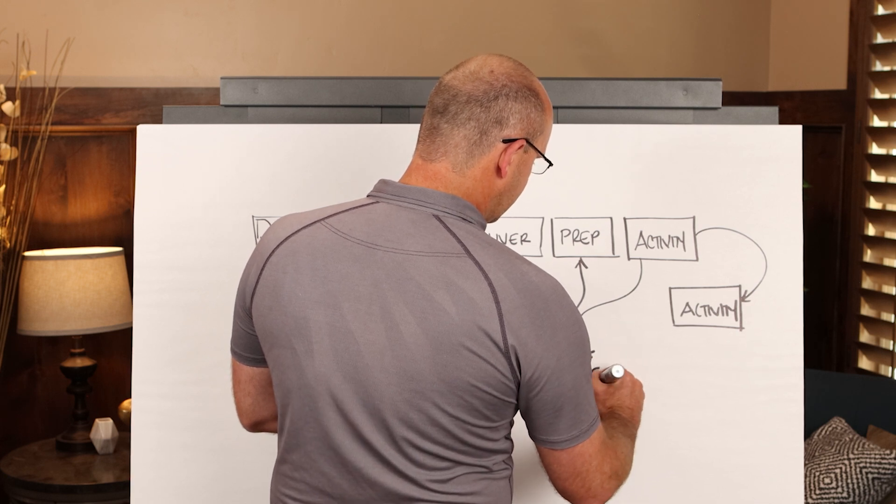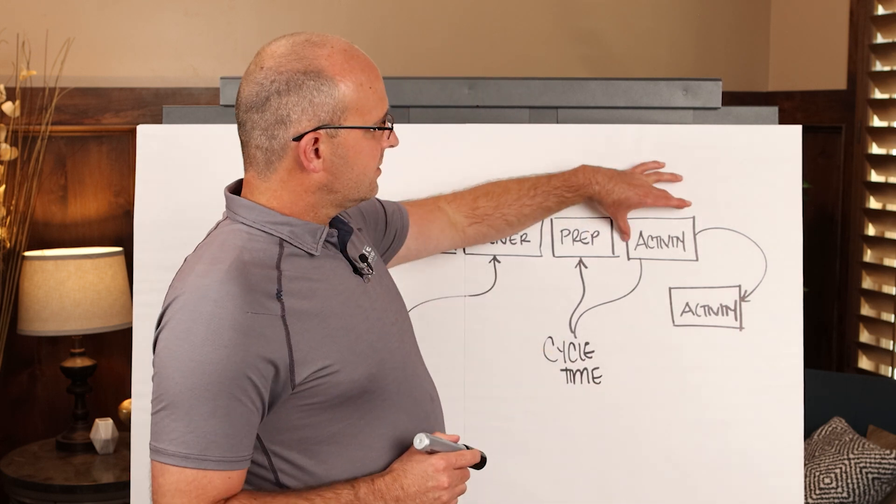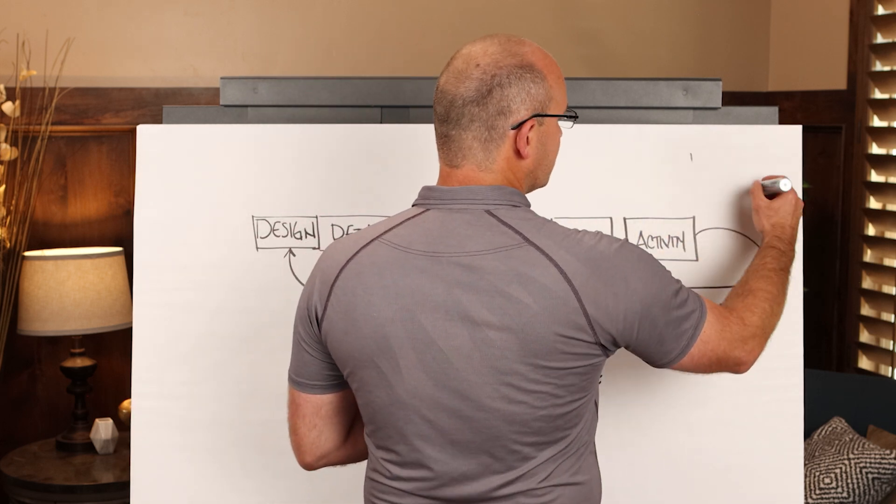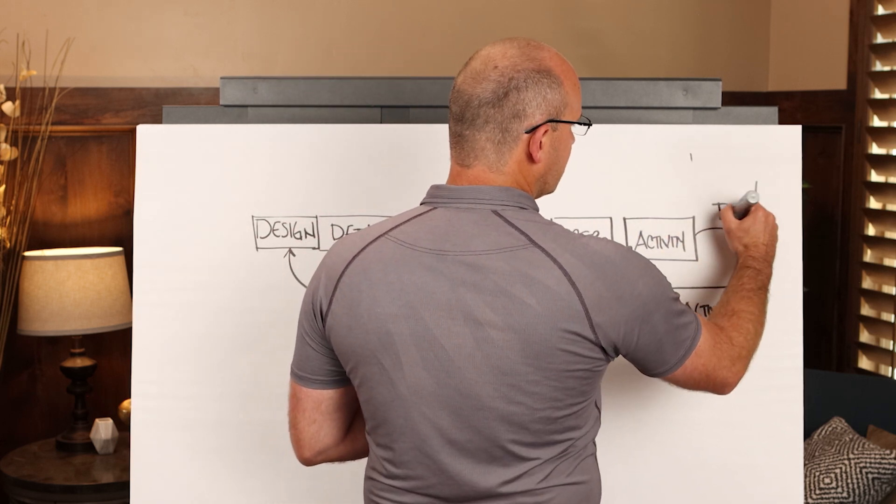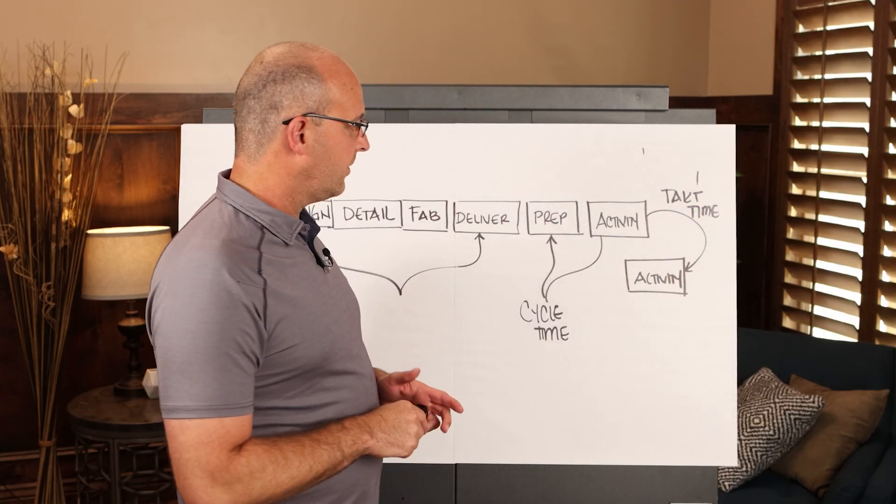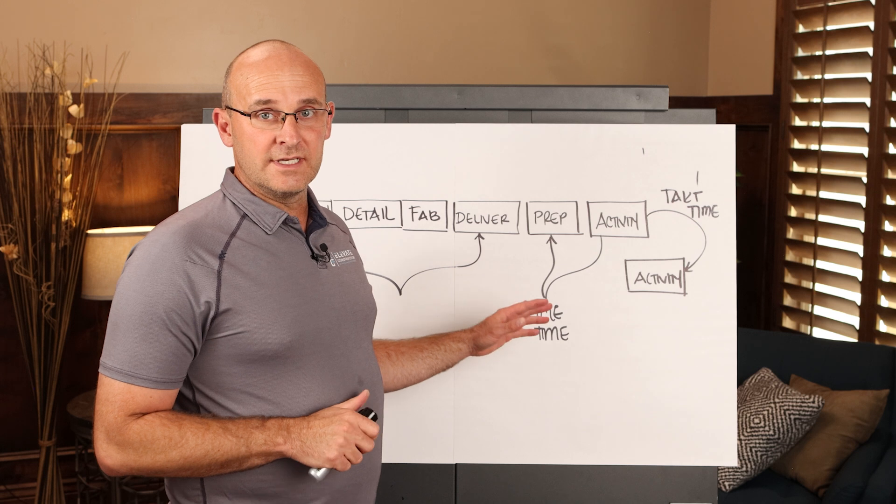The tack time is when you are producing multiple activities on a rhythm. The tack time is the rate of production. Okay. That meets the customer demand and sets the overall pace. So these are two very different things.